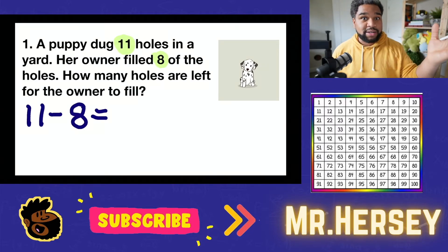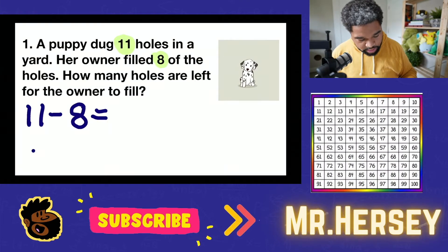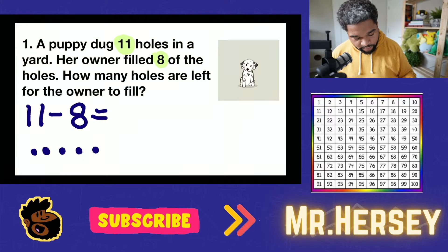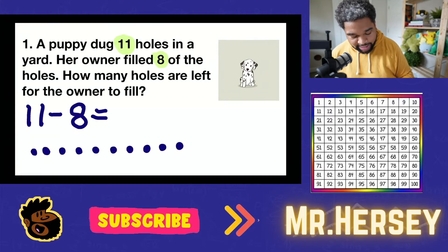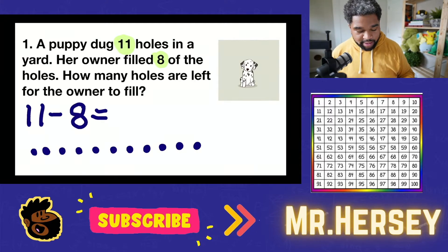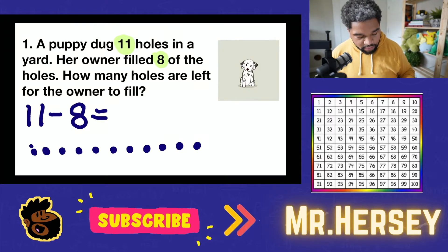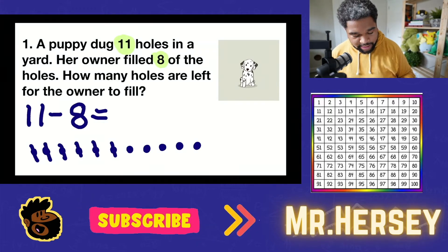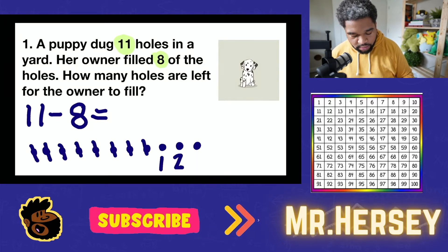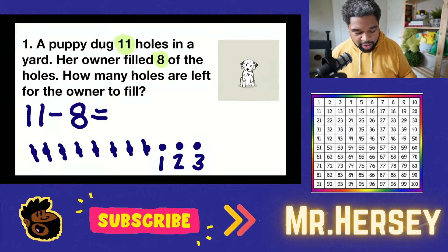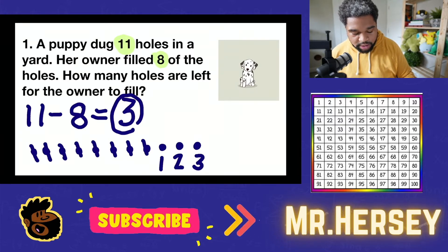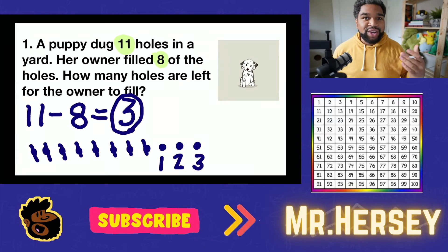Let's begin. We draw 1, 2, 3, 4, 5, 6, 7, 8, 9, 10, 11 dots. Now we need to take away 8 — 1, 2, 3, 4, 5, 6, 7, 8. That means there are 1, 2, 3 left. So 11 minus 8 equals 3.